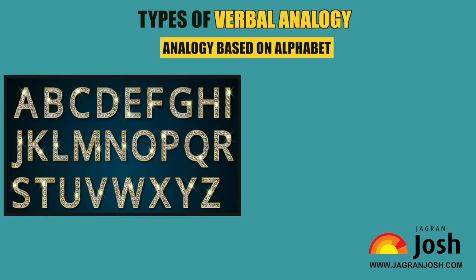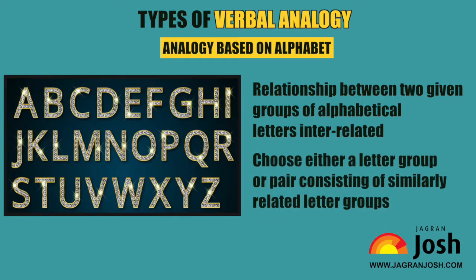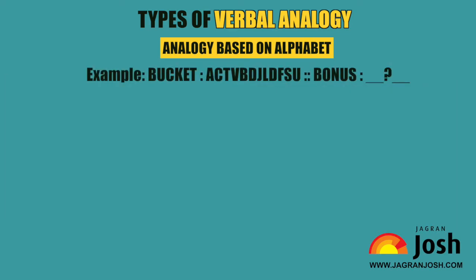Analogy Based on Letters: In these types of questions, a student is required to find out the relationship between two groups of alphabetical letters interrelated to each other in some way, and then choose either a letter group or pair consisting of similarly related letter groups. Example: BONUS — options are A. CDPQ, B. DJLD, C. ACNPMOTV RT, D. SUNOR.